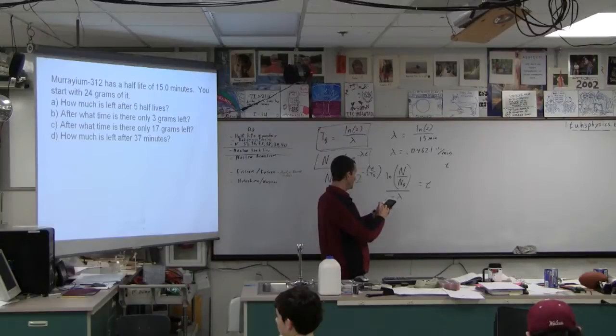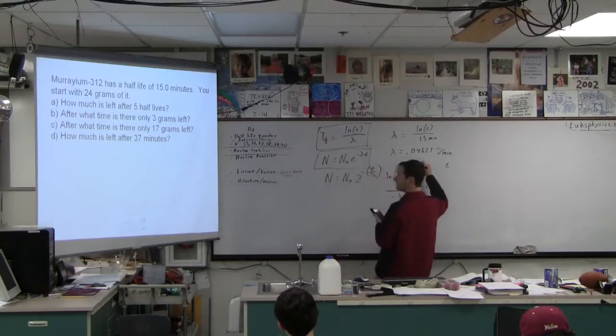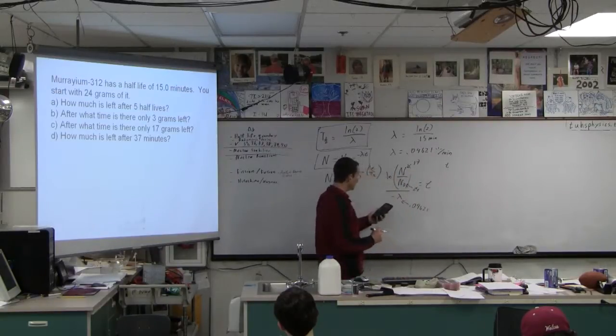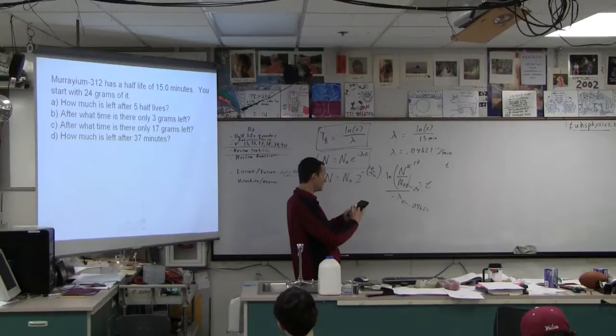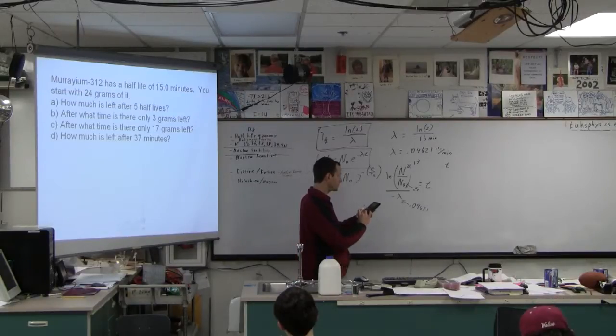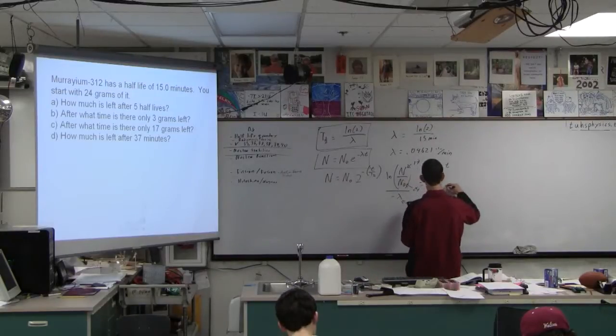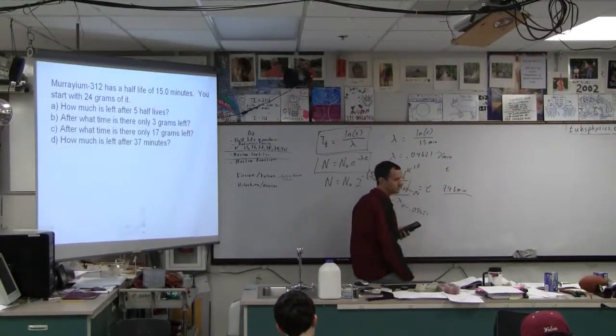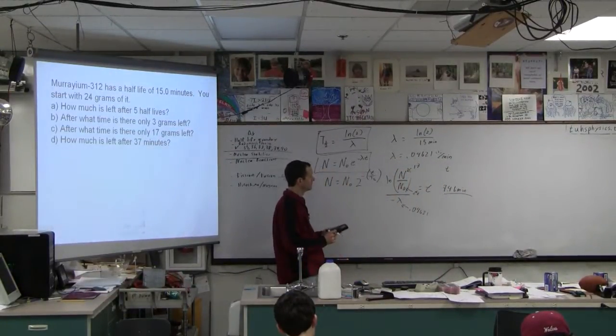So I just have to go natural log of, and then this number is 17 grams, the original number was 24, this is .04621 approximately. So natural log of 17 divided by 24, divided by negative the answer that I got previously, and that's 7.46 minutes, like I said.